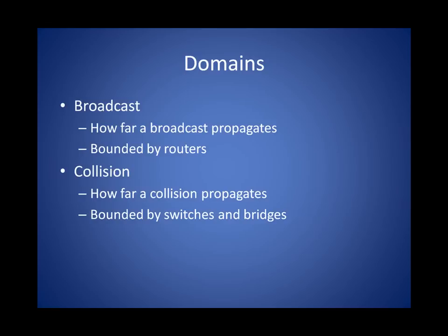A broadcast domain refers to the distance that a broadcast frame will travel before it stops. For example, a node issues an ARP request — a broadcast frame with all F's in the destination — and it hits a hub. The hub will continue to forward it because hubs don't care about MAC addresses. A switch or bridge will also forward this broadcast frame out all ports except the port it came in on. Routers, however, are more concerned with IP addresses and will stop a broadcast frame from propagating.